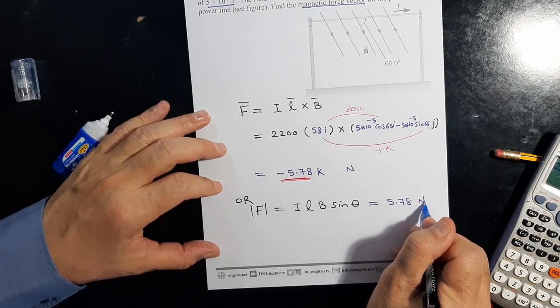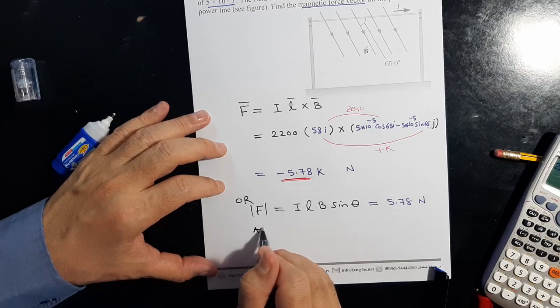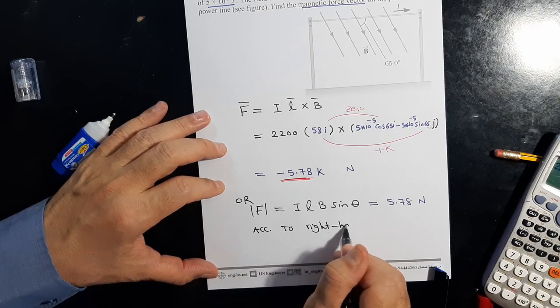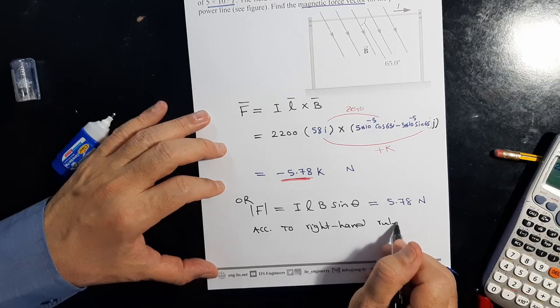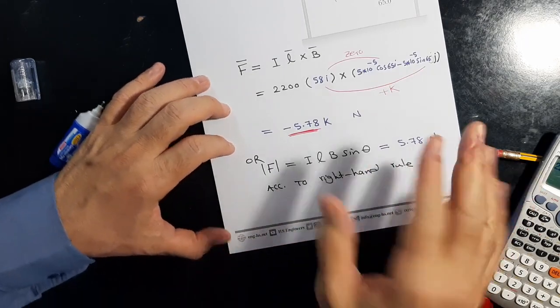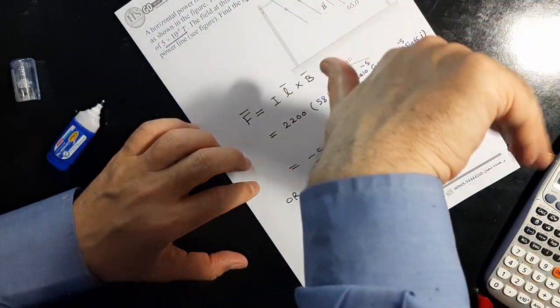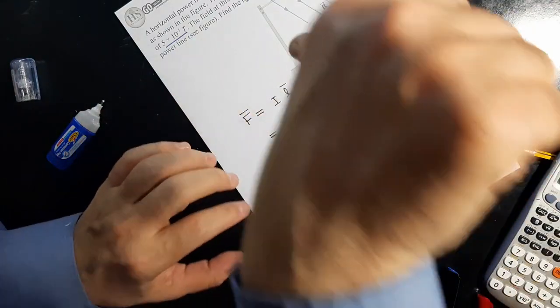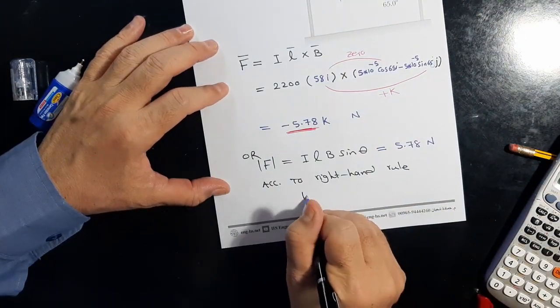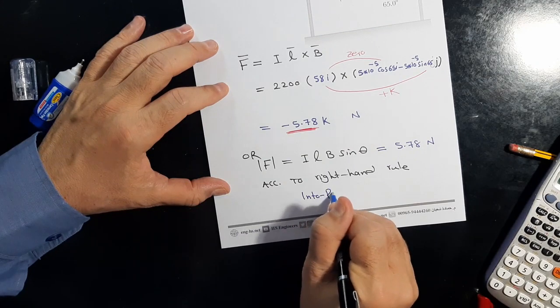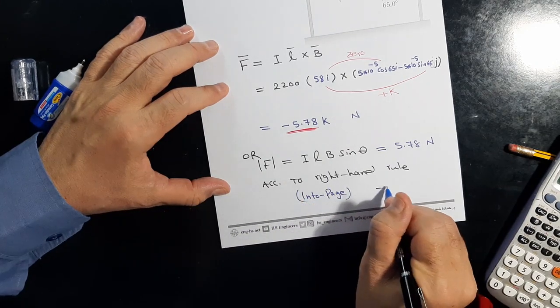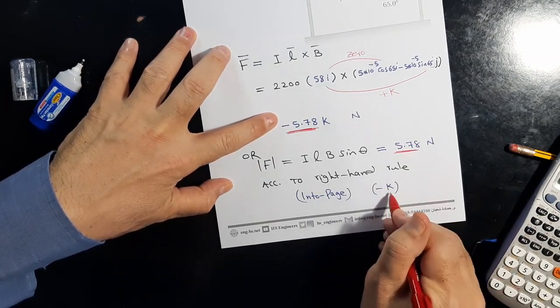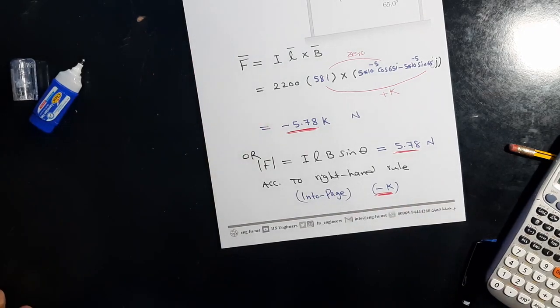According to the right-hand rule, which everyone is familiar with: finger points with the current, rotate in the direction of the magnetic field, thumb points in the direction of the force which is into the page. Into the page is expressed as minus k. So the magnitude is the same and the direction is minus k.